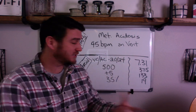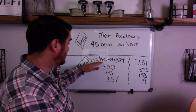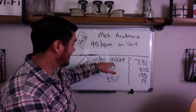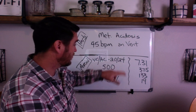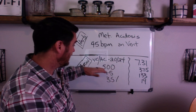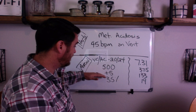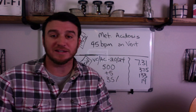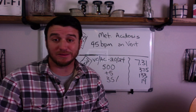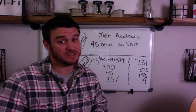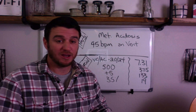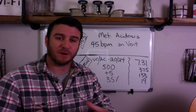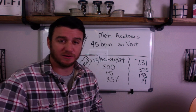This patient is on VC-AC with a set rate of 20, a total rate of 24, tidal volume 500, PEEP 5, and FiO2 35%. What would I do here? Probably nothing. Let me tell you why I would probably do nothing.